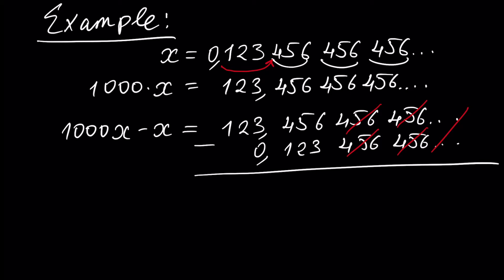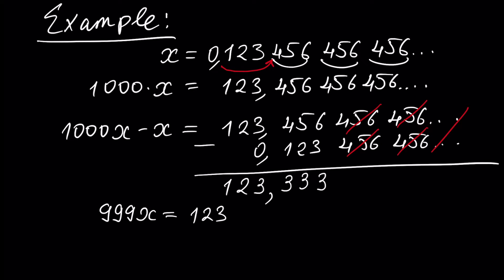So here we have: 6 minus 3 is 3, 5 minus 2 is 3, 4 minus 1 is 3. Here is 3, 1, 2. As a result, we have 1000x minus x, which is 999x, equal to 123.333.